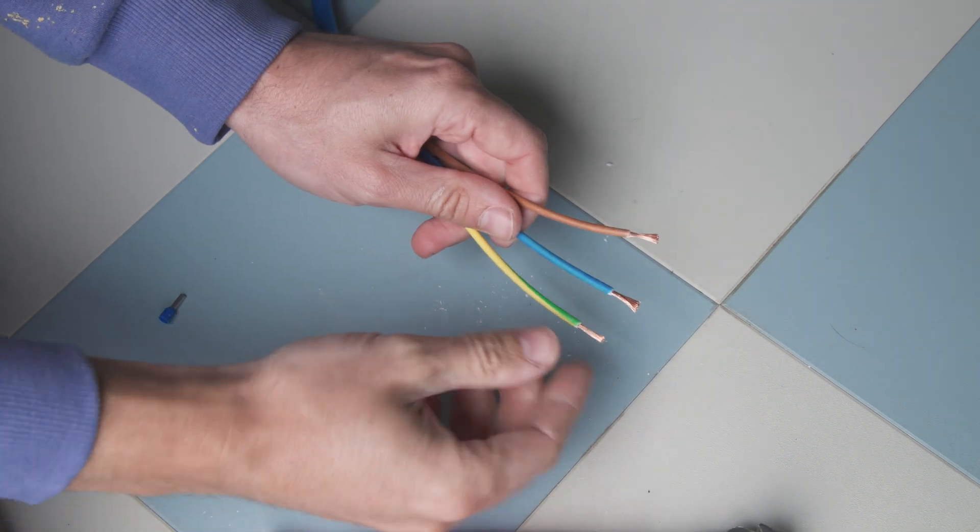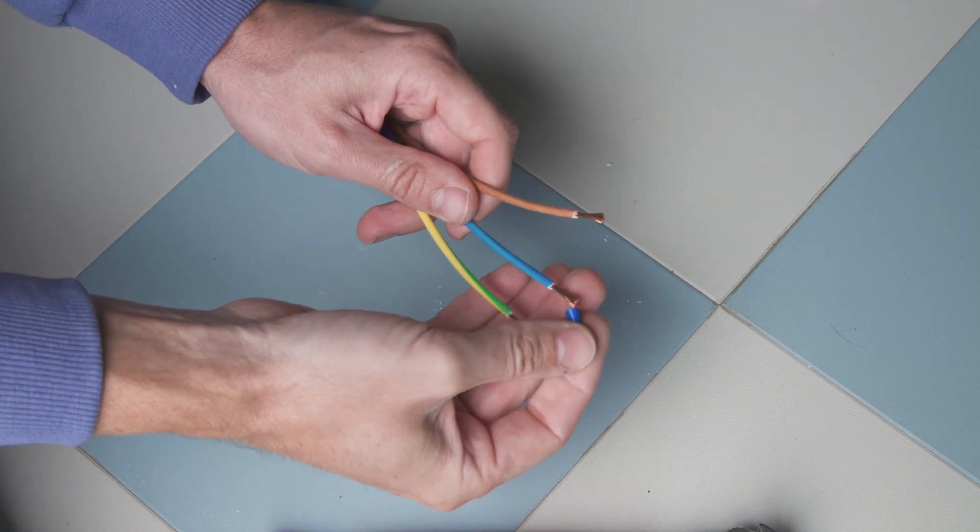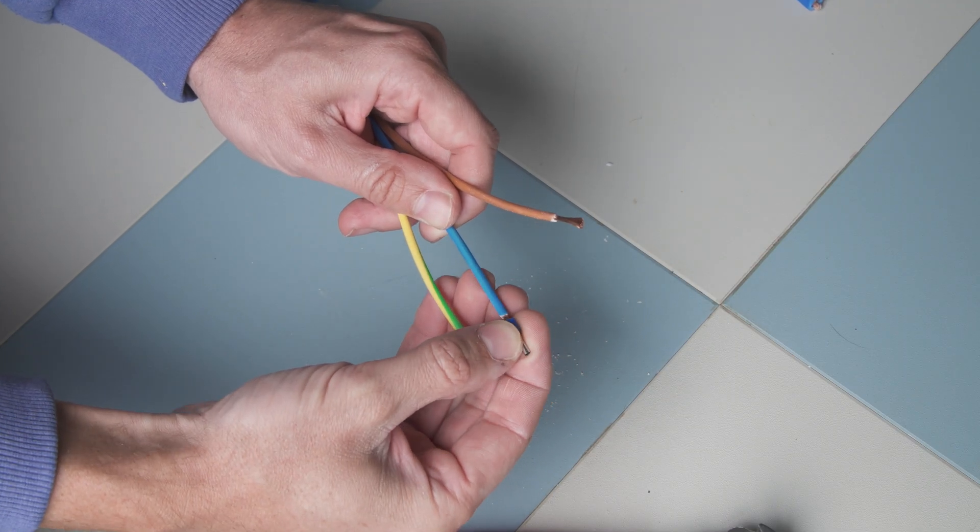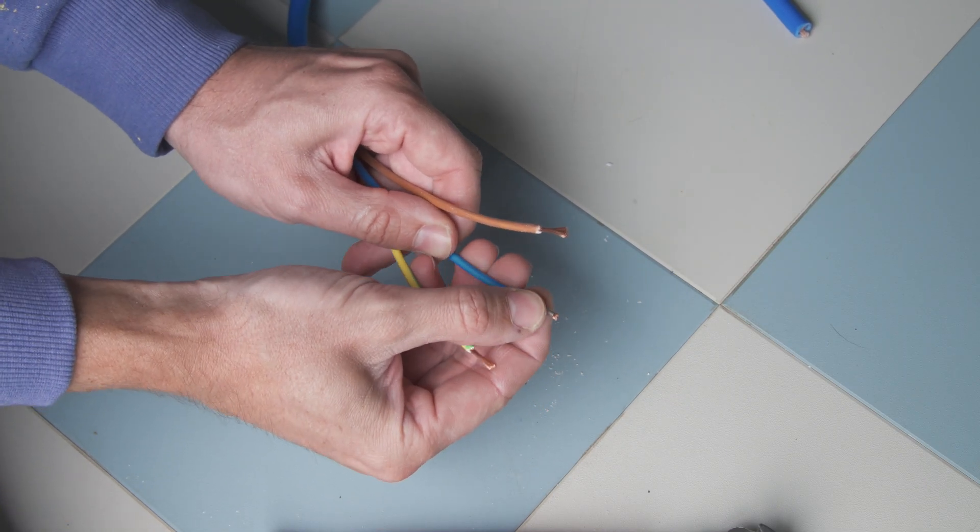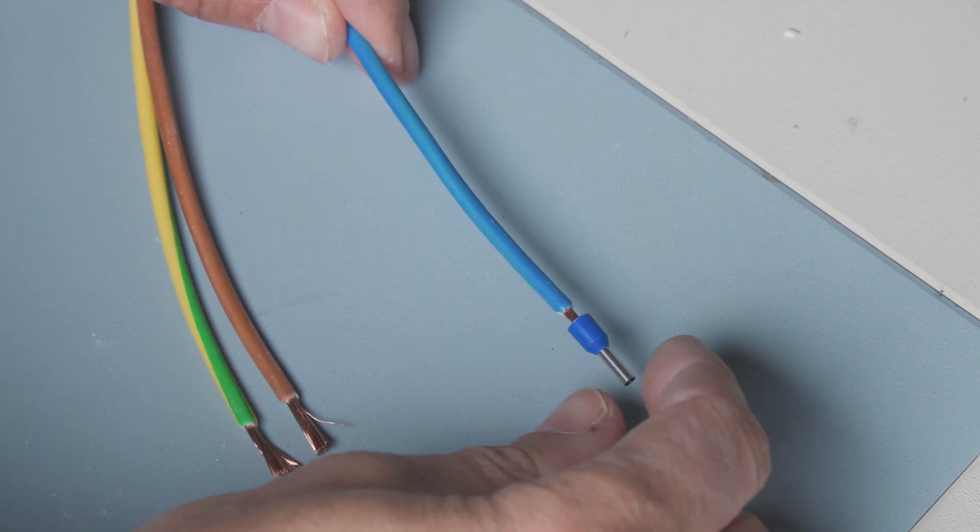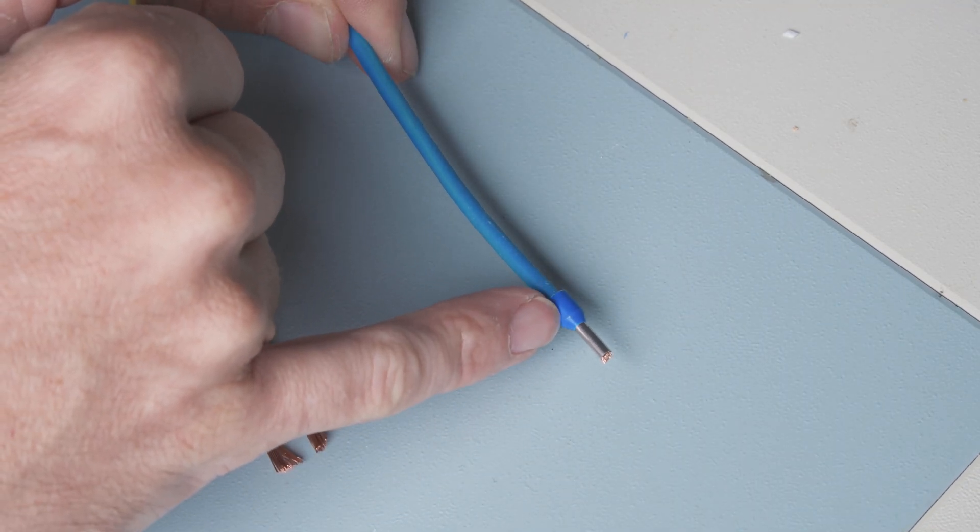Okay now don't be tempted to twist the strands. What you need to do is just place the ferrule crimp directly over the top making sure the strands stay nice and straight. There's different size ferrule crimps, obviously different size cables. I've got 2.5 millimeter square cable here so I'm using the blue ferrule crimps. Just going to push this crimp all the way on until the insulation of the cable butts up against this tapered part of the crimp.